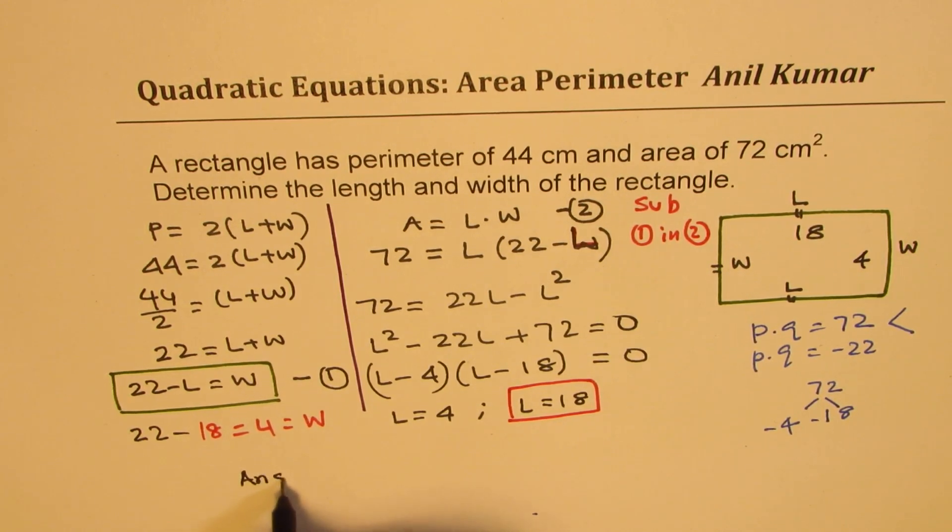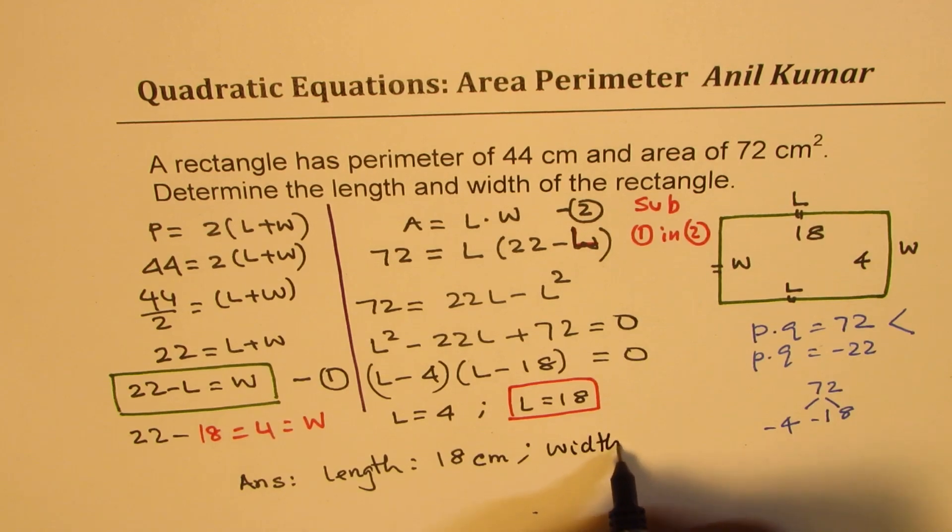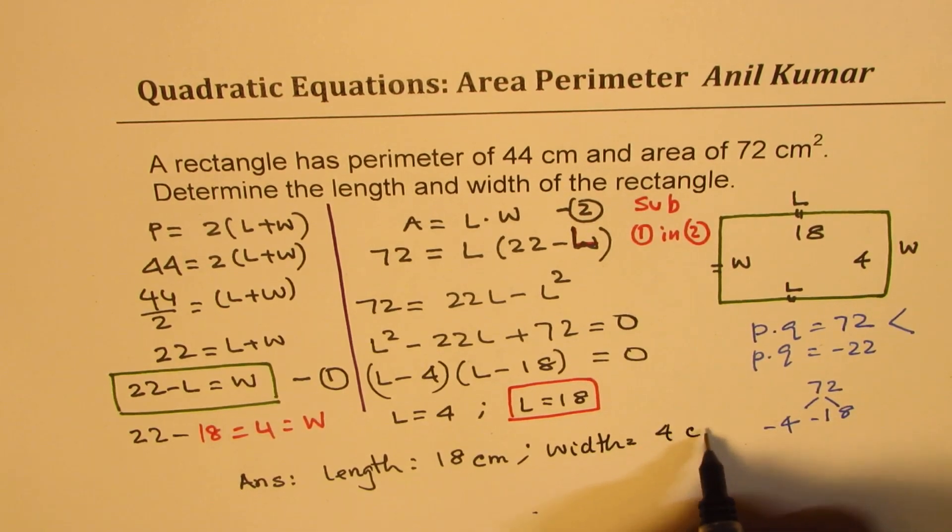And our answer is that the length - normally we put the longer side for length - is 18 centimeters. Don't forget the units. And width is equal to 4 centimeters.